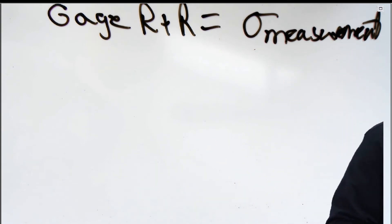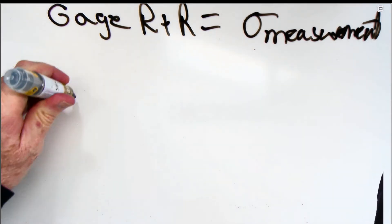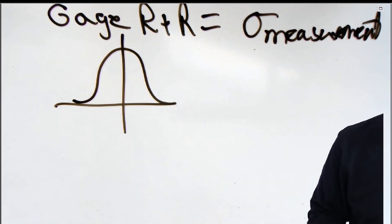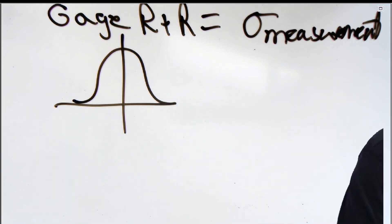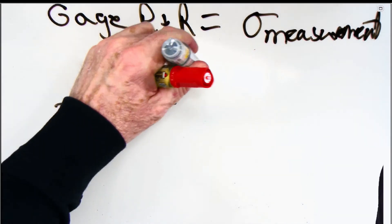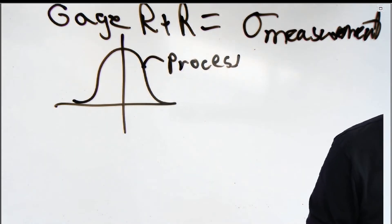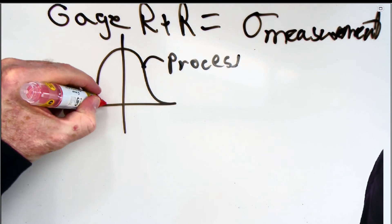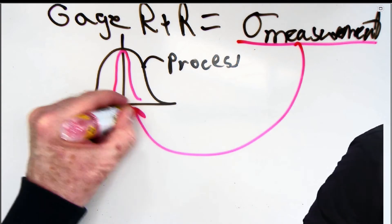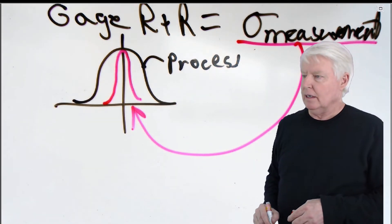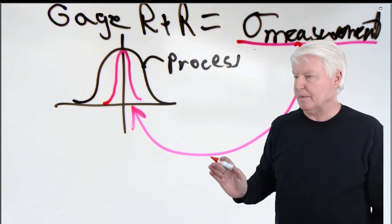What is sigma of measurement again? The process distribution — sigma of the process — consists of sigma of the part plus sigma of the measurement. The black curve is the process distribution. Within this distribution is another distribution that comes from the variation of measurement, which we call Gauge R&R. And the rest of that variation is sigma of the part.